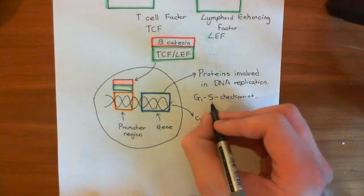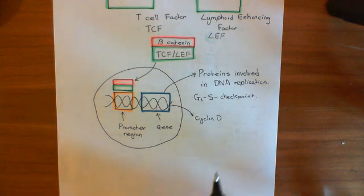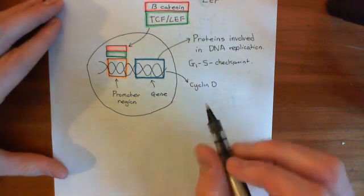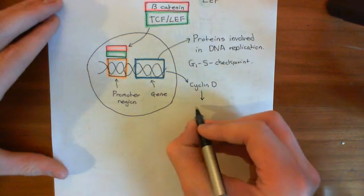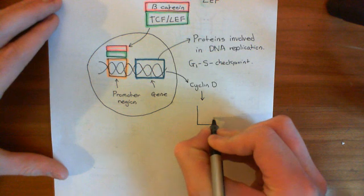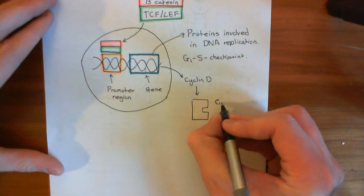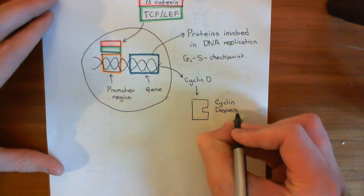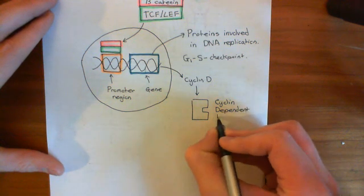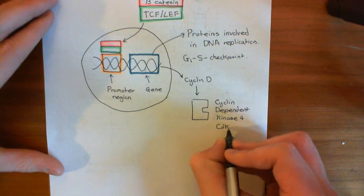Cyclin D is the protein that gets you through this G1S checkpoint. Cyclin D binds to a protein known as CDK4 — cyclin-dependent kinase 4 — which is a kinase that adds phosphate groups onto certain proteins. However, unless cyclin D is bound to it, CDK4 is not actually active. CDK4 is often abbreviated simply as CDK4.